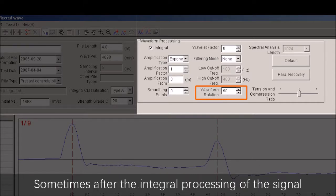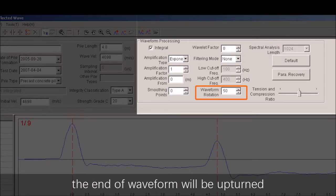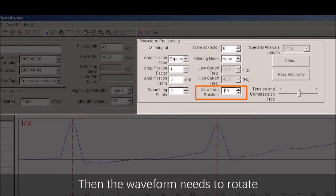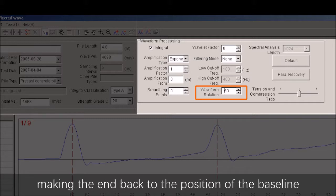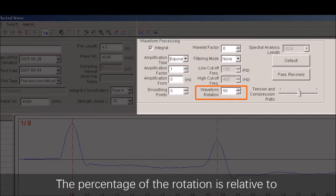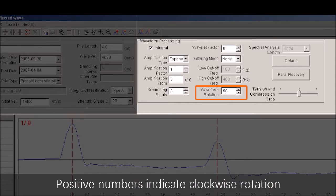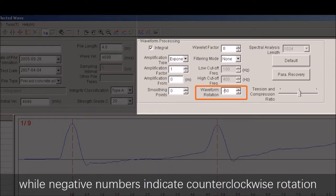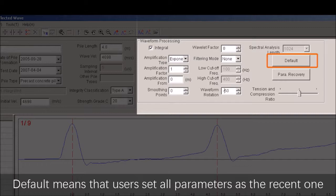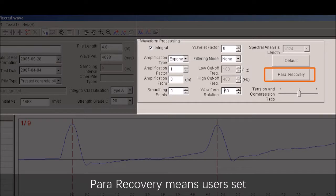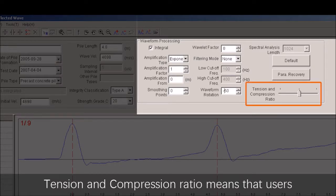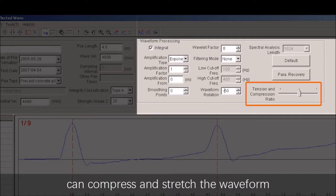Waveform rotation: Sometimes after the integral processing of the signal, the end of the waveform will be oblique. Then the waveform needs to rotate, making the end back to the position of the baseline. The percentage of the rotation is relative to the amplitude of the direct wave. Positive number indicates clockwise rotation, while negative number indicates counterclockwise rotation. Default means user set all parameters as the recent one. Parameter recovery means user set the parameter values as the default ones. Tension and compression ratio means users can compress and stretch the waveform.